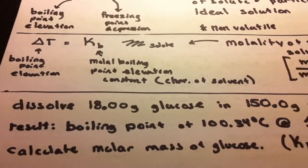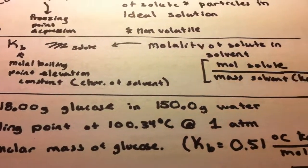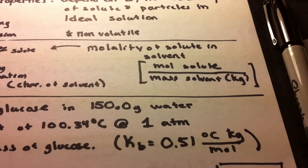Right now we want to calculate the molar mass of glucose. We're also given the KB which is 0.51.